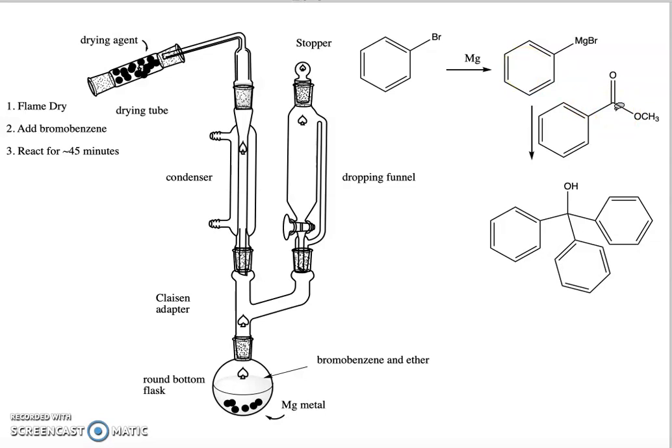We're going to treat this similarly to the way we did before. We have to get our solution of methyl benzoate into our dropping funnel as quickly and as dryly as possible. In our sealed graduated cylinder, we're going to have our methyl benzoate in the dry ether.